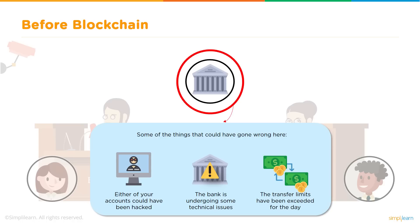Things can go wrong here too. Either of your accounts can get hacked, the bank can go under some technical issues, or you could have exceeded the number of transfer limits allotted to you. But with cryptocurrencies today, we can do these transactions with lower transaction costs and it's a 24/7 available technology, with no limitations on transfer limits per day or the amount you can transfer.